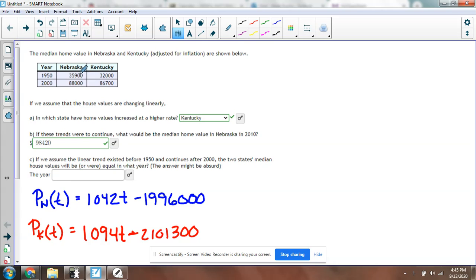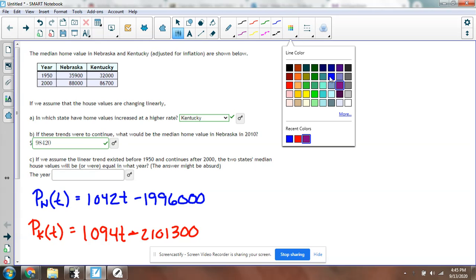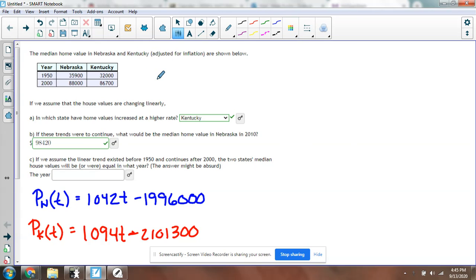In year 1950, these are the populations of Nebraska and Kentucky. In year 2000, these are the populations. You can write this as two different coordinate planes. When talking about Nebraska, I could have one coordinate which is (1950, 35,900) and one that's (2000, 88,000).